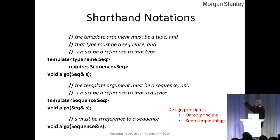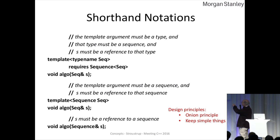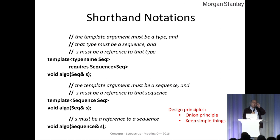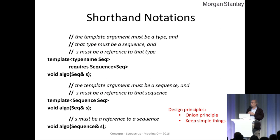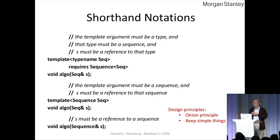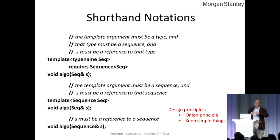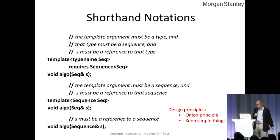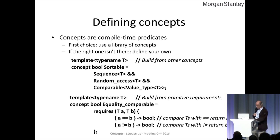I'll put some design principles here. Simple things are now simple. The onion principle is that you can do things very simply, but you can't do everything. So you peel one layer off the onion and you still can't do everything, so you peel another layer off the onion — and you cry more and more as you get closer. This is not the only place you do this in C++.